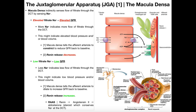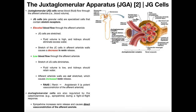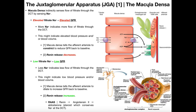There are two major parts of the Juxtaglomerular Apparatus. One is called the macula densa — sometimes we say the macula densa cells — and the other part is called the JG cells. JG stands for Juxtaglomerular. These are often called granular cells, so if you see the term granular cells, that means the same thing as Juxtaglomerular cells. We'll cover the JG cells in the second video; here we're going to look at just the macula densa cells.